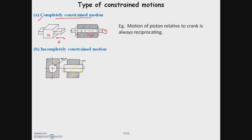Incompletely constrained motion: a shaft rotating inside a bearing can both rotate and slide inside the bearing. You cannot exactly predict the amount of rotation related to the amount of translation — motion takes place in two directions and is unpredictable. Such motions are called incompletely constrained motion — motion which takes place in more than one direction.